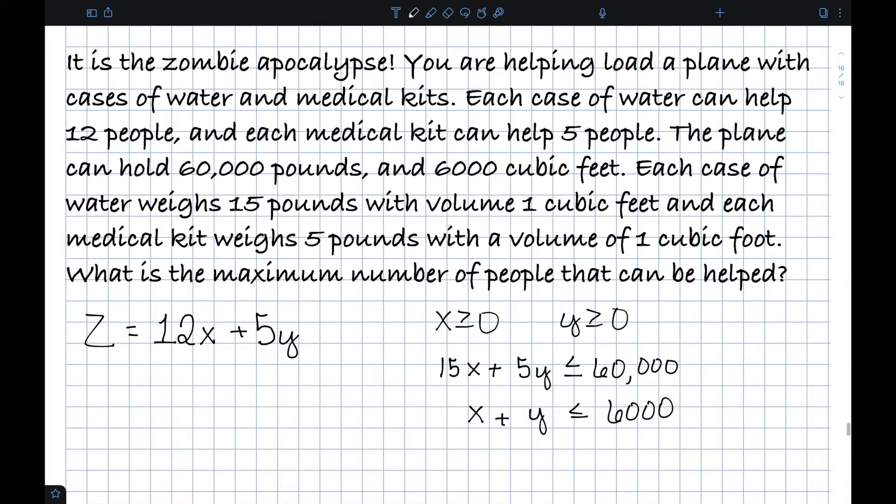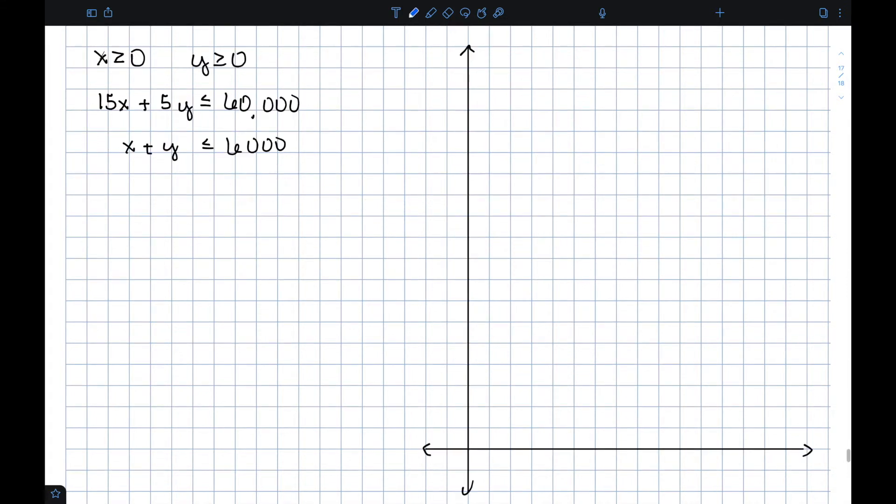So now that I have my constraints, let's solve this system. Let's start by graphing the inequalities. The x greater than or equal to zero and y greater than or equal to zero just tells me I'm in this first quadrant. And let's look at the intercepts. My first equation, if I let x equal zero, I have 5y equal to 60,000 or y equals 12,000. If I let y equal zero, I have 15x equal to 60,000. Dividing both sides by 15 gives me 4,000.